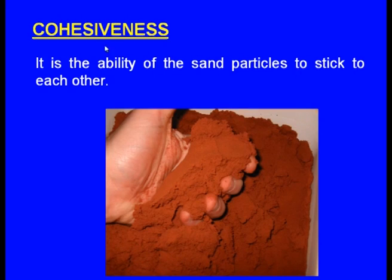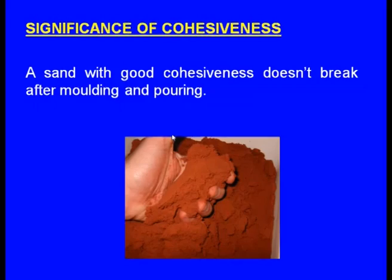The next property is cohesiveness. It is the ability of the sand particles to stick to each other. Once pressed, the sand should take and retain that shape — it should not spring back to its original shape. A sand with good cohesiveness does not break after molding and during pouring. That is the significance of cohesiveness.